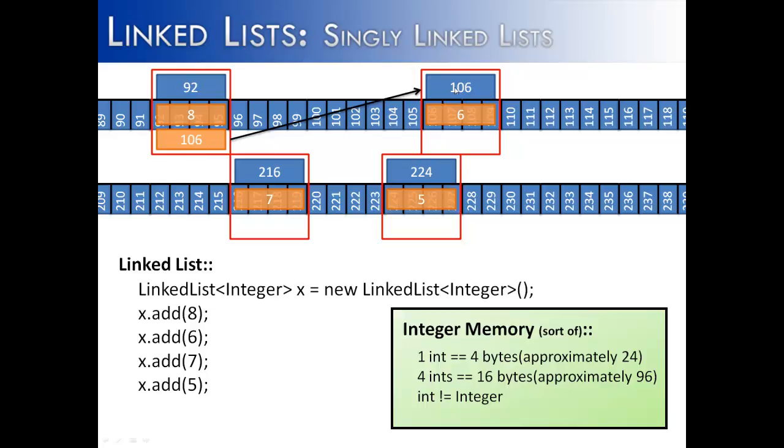And that memory reference points to this one, so I know how to get to the next value inside of the linked list. This one has the first part of our linked list, and that would be the value inside of the node. Now we need to get to the next value, which is 216 in memory. So I add a memory reference pointing to the next node, and then finally the last node would be pointing to 224 in memory.